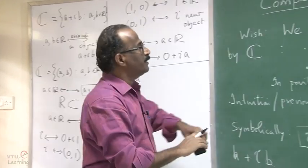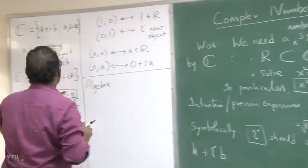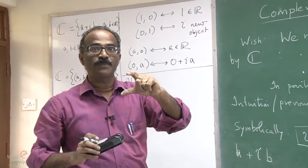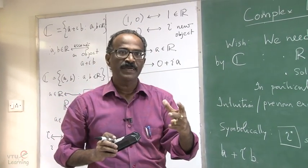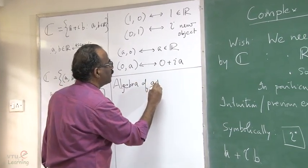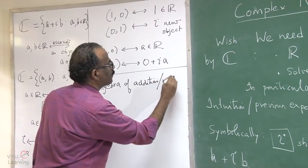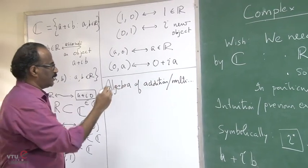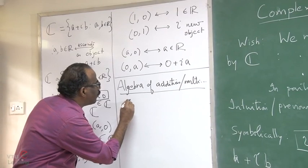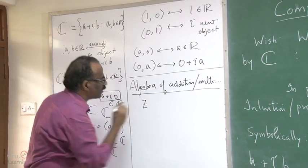At this stage, C is not yet a number system — it is only a collection of objects. It will become a number system when we introduce algebra, namely addition and multiplication. Elements of C are called complex numbers, usually denoted by z.